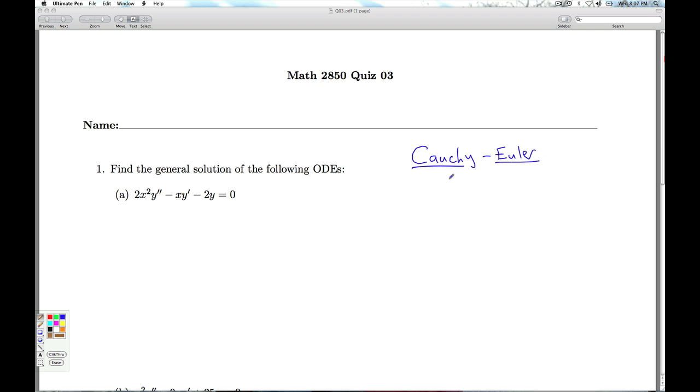Let's remind ourselves what the Cauchy-Euler equation looks like. For second order Cauchy-Euler, it looks like some constant x squared y double prime, plus another constant x y prime, plus some constant y equals zero.